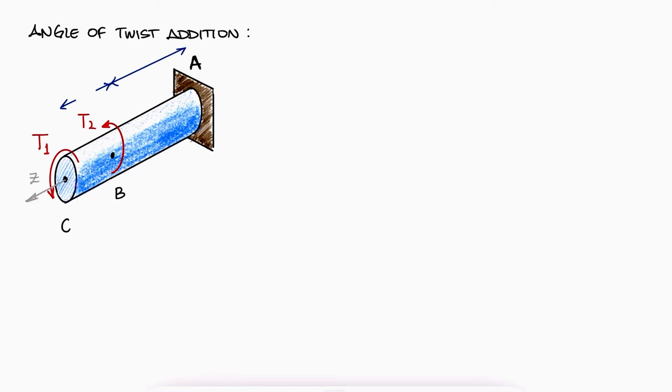Finally, let's focus on the length variable now. If we want to find phi C, which is phi of C with respect to the wall A, it will be equal to the angle of twist of C with respect to B plus that of B with respect to A.